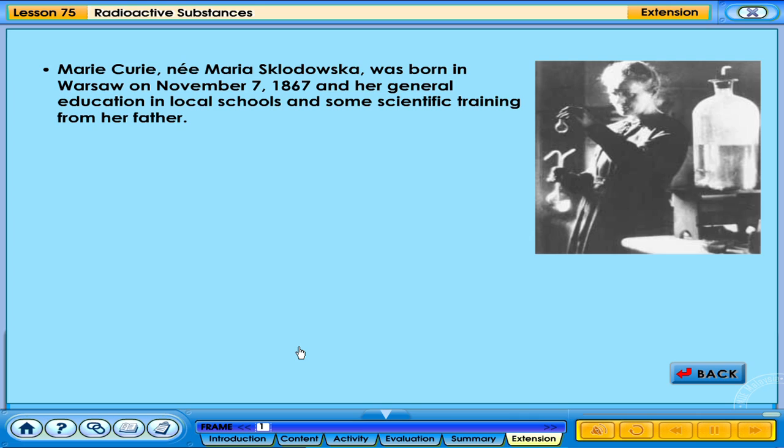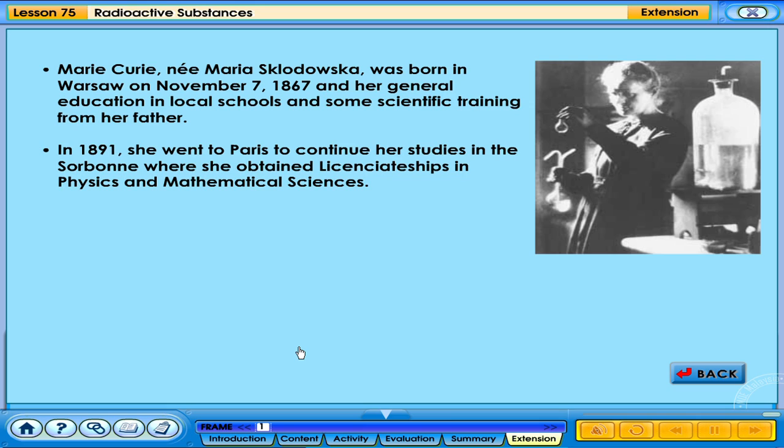Marie Curie, named Maria Sklodowska, was born in Warsaw on November 7, 1867 and received her general education in local schools and some scientific training from her father. In 1891, she went to Paris to continue her studies in the Sorbonne where she obtained a license in physics and mathematical sciences.